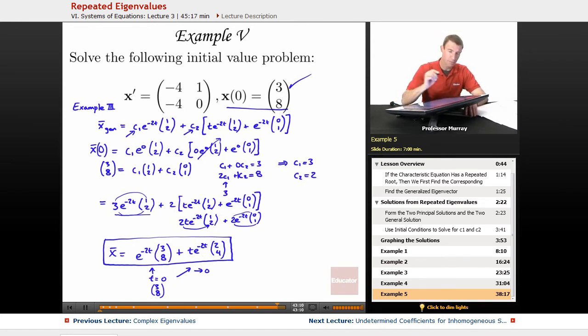So, let me recap what we did there. I started out with the general solution that I worked out in Example 3. So, if that general solution was a complete mystery to you, just go back and watch Example 3, you'll see it. And then I plugged in t is equal to 0 here based on my initial condition.